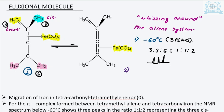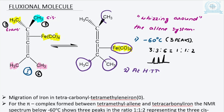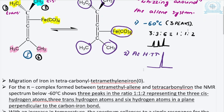At high temperature, due to the rapid movement or whizzing of the Fe(CO)4 group of atoms along the allyl system, all the protons appear to be equivalent to the NMR spectrometer on its time scale. The spectrometer cannot distinguish the non-equivalent protons, so at high temperature you get only one peak.